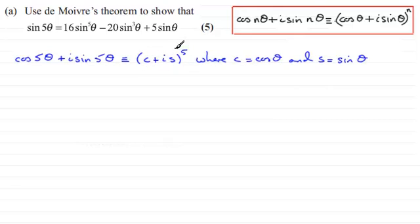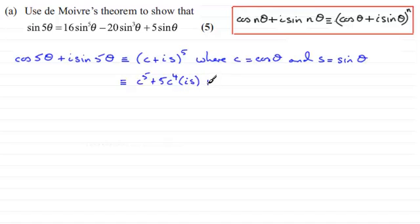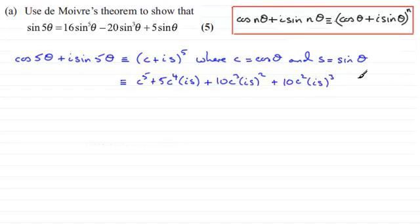We need to expand this by the binomial expansion. Doing that, we get: c⁵ + 5c⁴(is) + 10c²(is)³ + 5c(is)⁴ + (is)⁵.